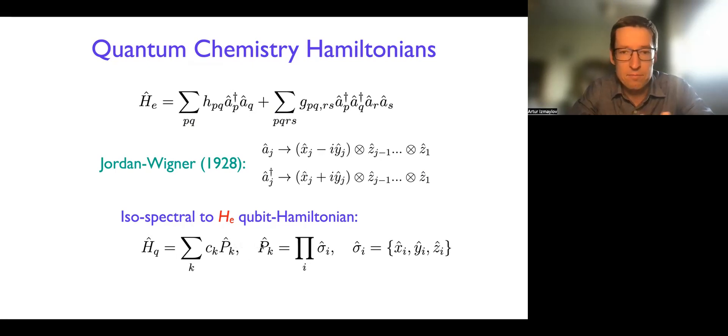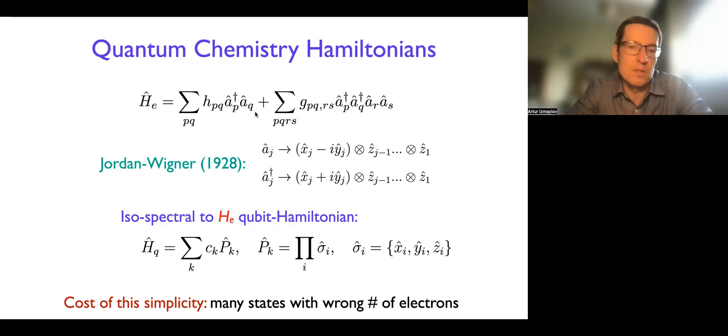And it's either spectral. So if you diagonalize HQ, you get the same spectrum as initial Hamiltonian. But the cost of this simplicity is that we're working in the Fock space, and there are lots of states in the Fock space with a number of electrons that are different than what we maybe want to investigate, right? So it's anions, cations, and of the multiple charges, right? So it's all contained in the Fock space.